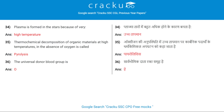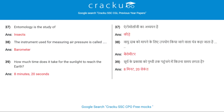Plasma is formed in stars because of very high temperature. Thermochemical decomposition of organic materials at high temperatures in the absence of oxygen is called pyrolysis. The universal donor blood group is O. Entomology is the study of insects.